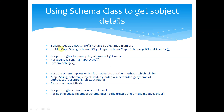Now if you want to look at the Schema classes — an important class to get SObject details — if you say Schema.getGlobalDescribe(), it will give you an SObject map. You can further drill down. It gives you a map of String and object types. You can loop through the schema map. You can say for String x : schemaMap.keySet() — it will give you all the object names.